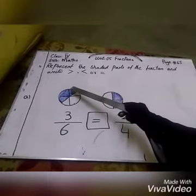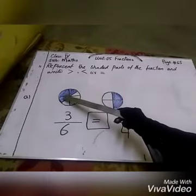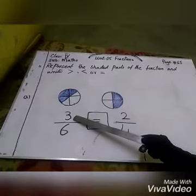How many shaded parts have? 1, 2, 3. Three shaded parts. We write the number in the numerator.